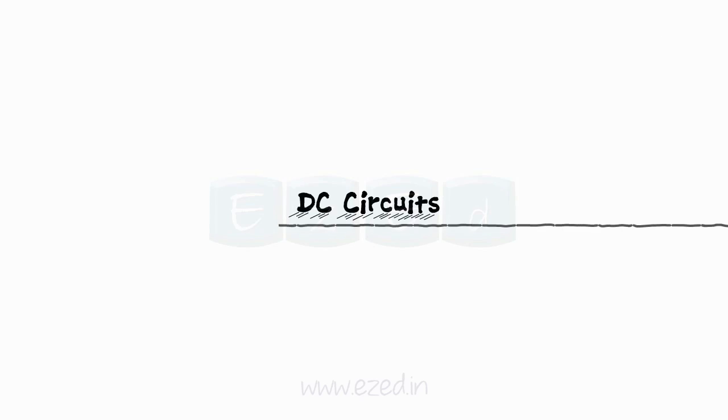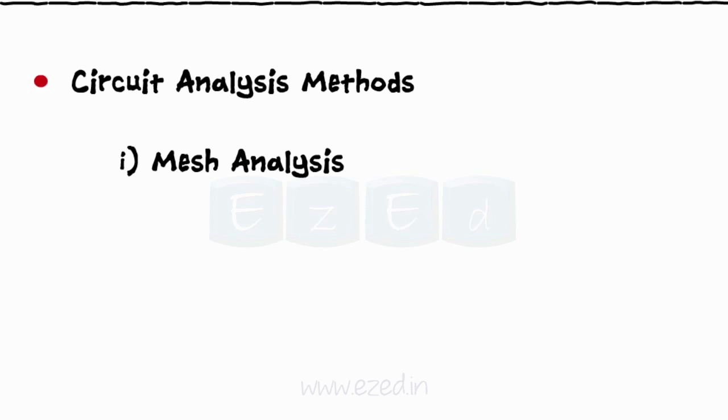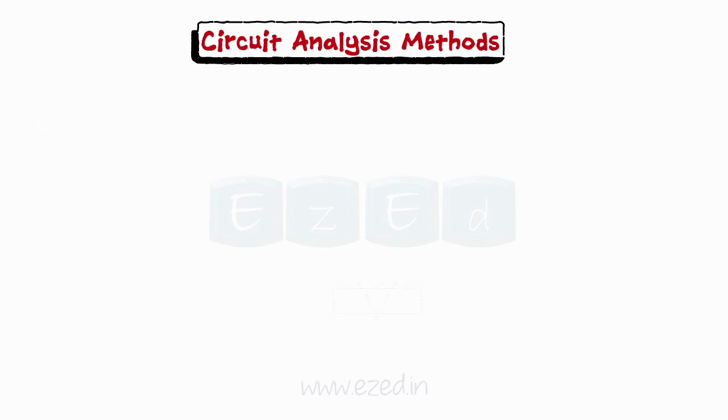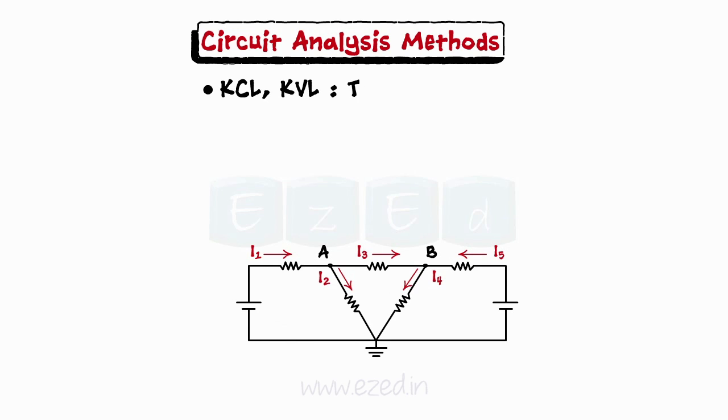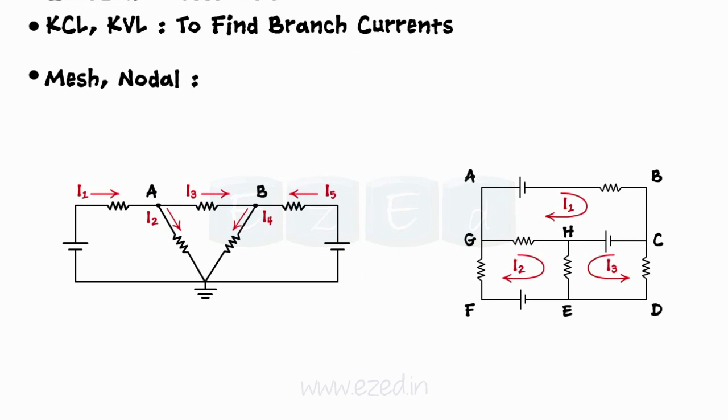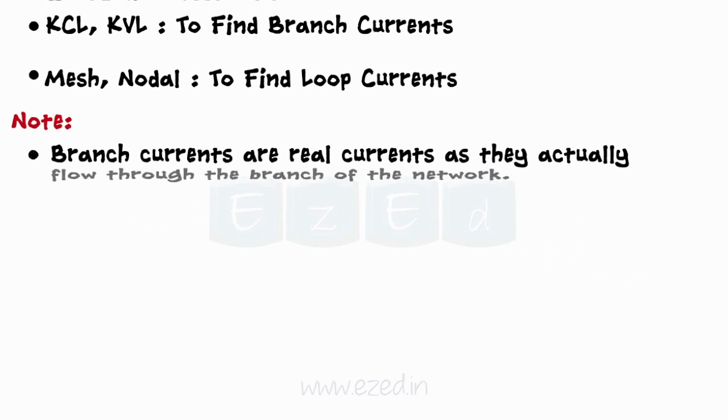In this part of DC Circuits lecture, we will learn mesh and nodal methods of circuit analysis. We have already seen the use of KCL or KVL to find the branch currents. Mesh analysis is the method in which KVL is used to find loop currents instead of branch currents.